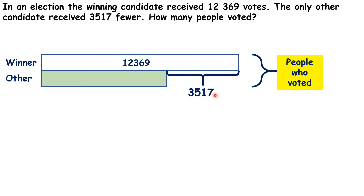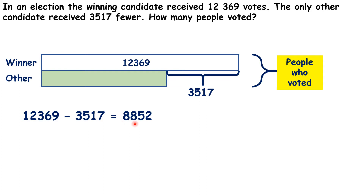If you use column subtraction for this, you should get an answer of 8,852. So, that's how many people voted for the other candidate.